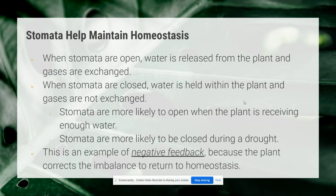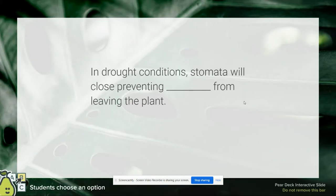This is an example of negative feedback because the plant corrects the imbalance to return to homeostasis. If the plant is sensing it's not getting enough water and might be starting to dry out, it closes its stomata to prevent water loss, which helps bring the plant back to homeostasis. Now I have a few questions for you to respond to — you are welcome to use your notes.